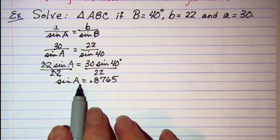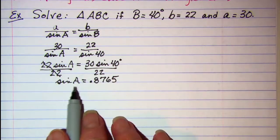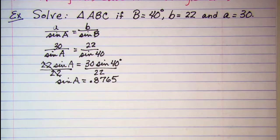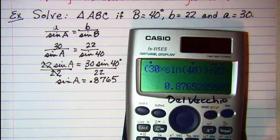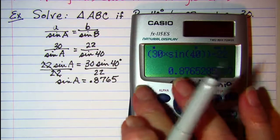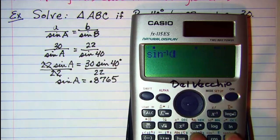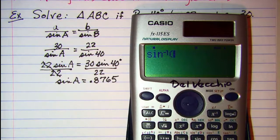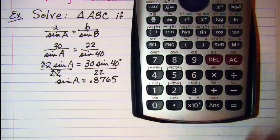Now this we know is in the range of our sine function. So we can do an inverse sine on that answer, shift sine, and then to bring up that ratio we can hit the ans key.